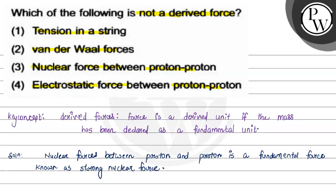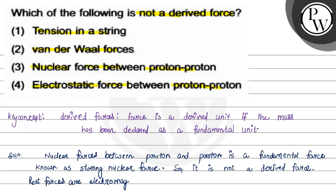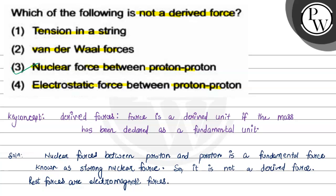So it is not a derived force. The rest of the forces — tension in string, Van der Waals forces, and electrostatic forces between proton and proton — are electromagnetic forces, which are derived forces. So the correct answer for this problem is option number three, nuclear forces between proton and proton. Hope you understood it well. Best of luck.